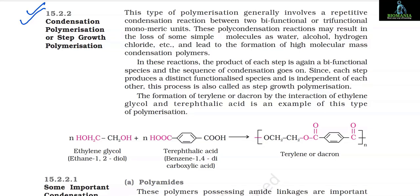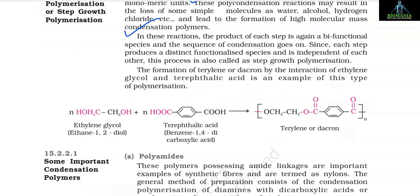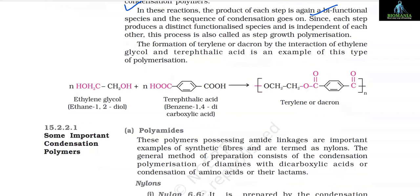15.2.2 Condensation polymerization or step growth polymerization: This type of polymerization generally involves a repetitive condensation reaction between two bifunctional or trifunctional monomeric units. These polycondensation reactions may result in the loss of some simple molecules such as water, alcohol, hydrogen chloride, etc., and lead to the formation of high molecular mass condensation polymers. In these reactions, the product of each step is again a bifunctional species, and the sequence of condensation goes on. The formation of terylene or dacron by the interaction of ethylene glycol and terephthalic acid is an example of this type of polymerization.